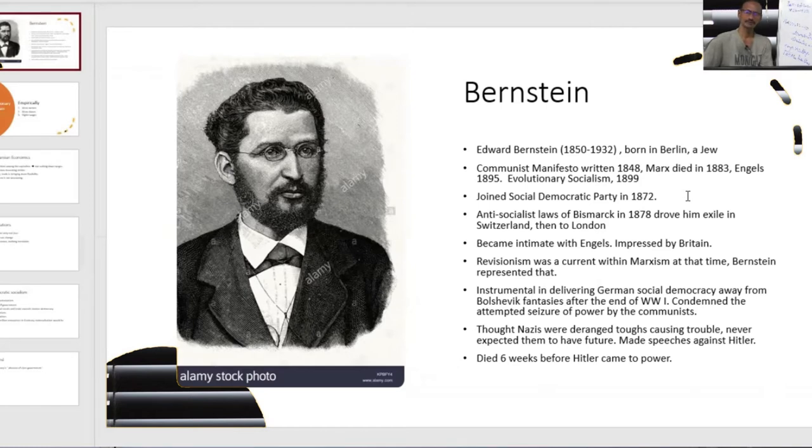The significance of Bernstein's work is that Marx and Engels wrote Communist Manifesto in 1848. Marx died in 1883 and Engels in 1895. But by that time, by the end of 19th century, capitalism was changing. It was changing even during Marx's time and more later, but Marx and Engels did not update the Manifesto. They didn't really change their thinking.